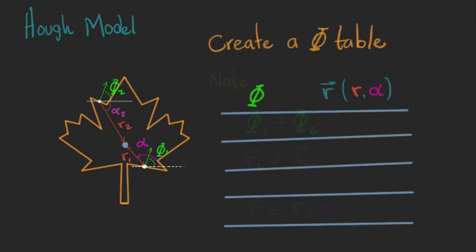So this table is called the phi table, because we will order all the points based on phi, and on the right we have the vectors.